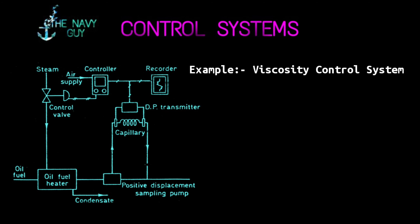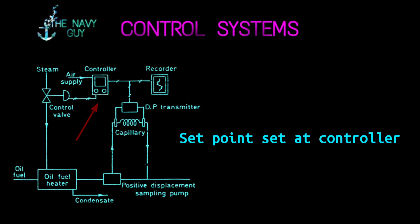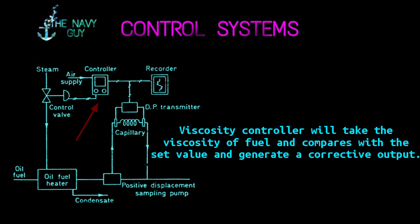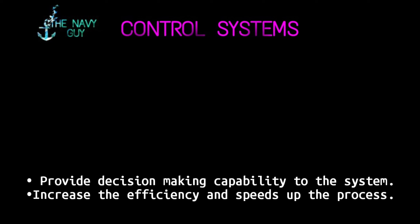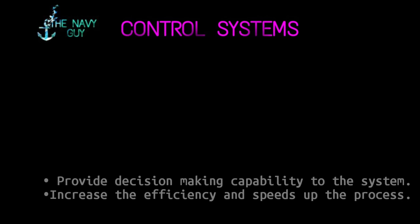For example, the viscosity control of fuel on board. A set value is defined by a watch keeper, after which the viscosity controller will control it with its own control system. It will take the feed — the present viscosity of fuel — and compare it with the set value. On the basis of this difference, the corrective action will be taken by the system. The main aim of a control system is to provide decision-making capability, increasing efficiency and speeding up the process.